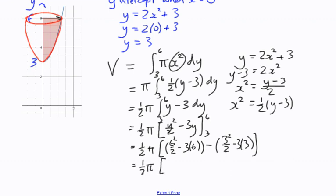That first bracket, 36 divided by 2 is 18. 18 minus 18 means that that whole value there is 0. And on the second bracket, we've got 9 over 2 minus 9. 9 over 2 minus 9 is negative 9 over 2.